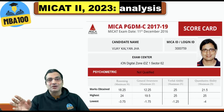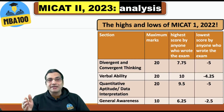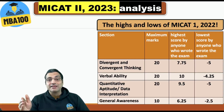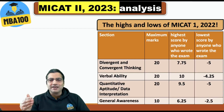The difficulty level has gone up enormously. In MICAT 1, the highest score in convergent and divergent thinking was 7.75 out of 20. In verbal ability the highest was 10 out of 20. In quantitative aptitude and data interpretation the highest was 9.5 out of 20. In general awareness, 6.25 out of 10 — that is still acceptable.